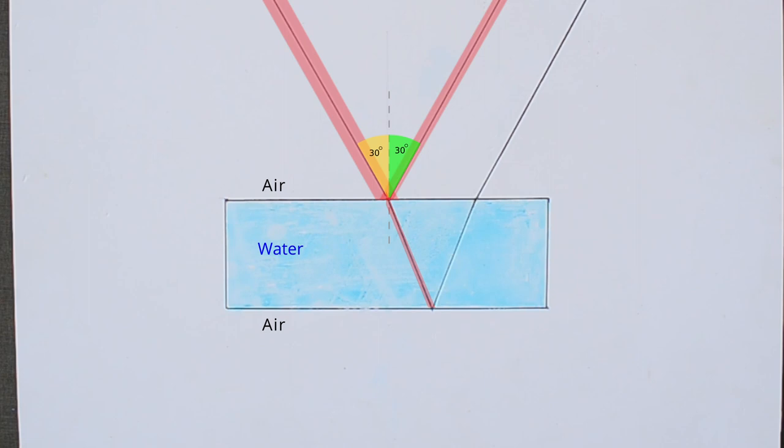With the refractive index of water at 1.33, as per Snell's law, angle of refraction will be 22 degrees. This refracted ray gets reflected again at the water-air boundary. Some of it escapes the film, but we will ignore it for now. Reflected ray hits the water-air interface or boundary, gets refracted and escapes. Second reflected ray is parallel to the first one.